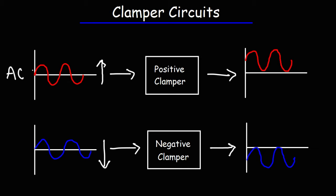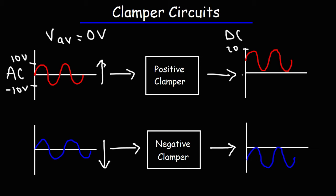Here we have an AC signal which varies from negative 10 to positive 10. If you connect that signal to a voltmeter, the average voltage the voltmeter reads is 0 volts, because the average of negative 10 and 10 is 0. On the right, we have a voltage-varying DC signal. The peak voltage will be 20 and the minimum voltage will be 0 — this is under an ideal situation.